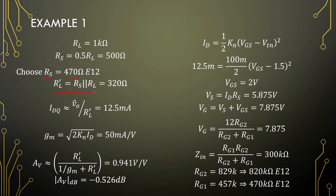R_load_prime is 320 Ω — a source resistor in parallel with a load resistor. Taking this with the peak output voltage, the design drain current is 4 V / 320 Ω = 12.5 mA. This gives us a transconductance of 50 mA/V. Taking 1/GM and our loaded gain: R_load_prime / (1/GM + R_load_prime) = 0.941 V/V — fairly close to 1.